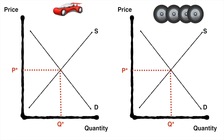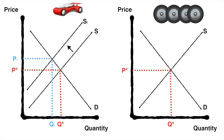Let's examine the graphs for these two markets together — new cars and car tires. Suppose we start from this equilibrium position. If, due to a rise in the cost of production, there is a decrease in the supply of new cars, this will shift the supply curve for new cars to the left, resulting in a higher market price and decrease in equilibrium quantity. The increased price of cars is going to reduce the quantity of cars demanded and result in fewer cars sold. As a result, car manufacturers will decrease their demand for car tires, shifting the demand curve to the left. This results in a lower market price and decreased equilibrium quantity.